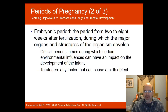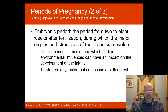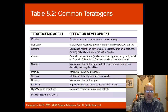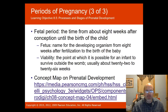A teratogen is any factor that can cause a birth defect. Alcohol, heavy metals, and other substances that enter the bloodstream can seriously disrupt the child's development. Teratogenic agents such as marijuana, cocaine, alcohol, and nicotine can have different effects on the baby's development, potentially leading to learning disabilities, blindness, deafness, miscarriage, a higher incidence of cancer, or physical deformities.